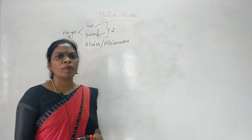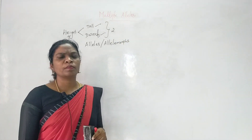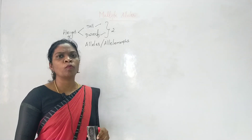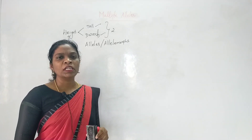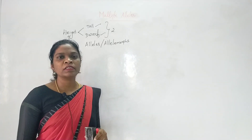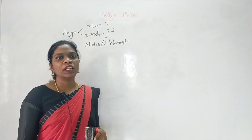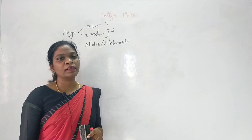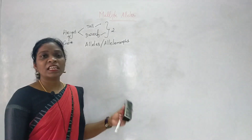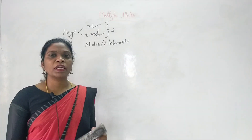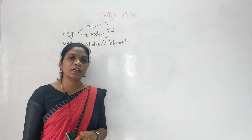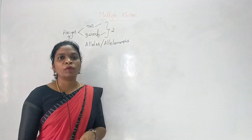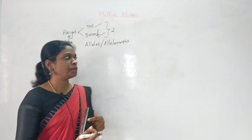What is multiple allelism? If the alternative forms are more than two, that is referred to as multiple alleles or multiple allelism. The best example to explain multiple allelism is ABO blood grouping in humans.